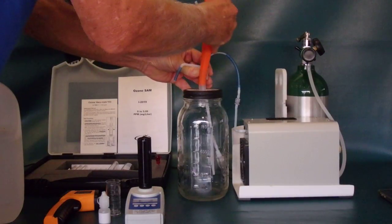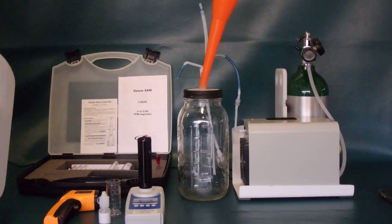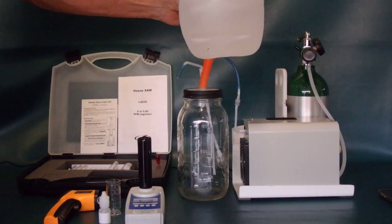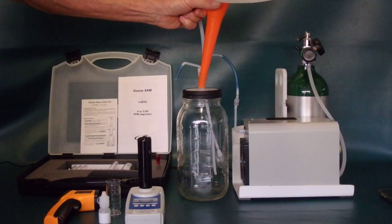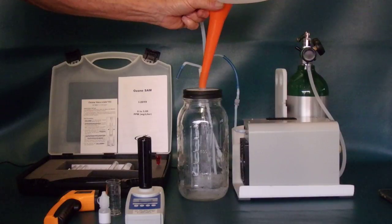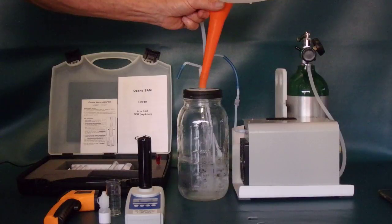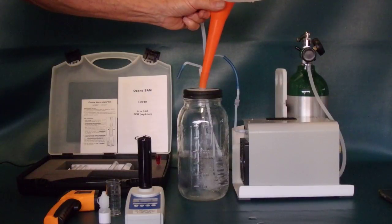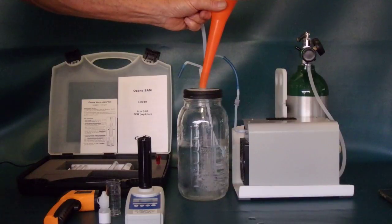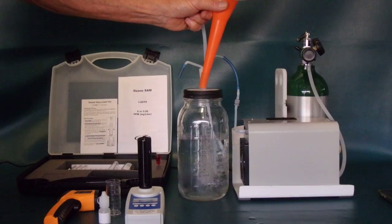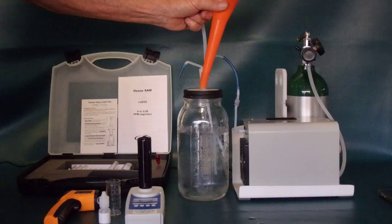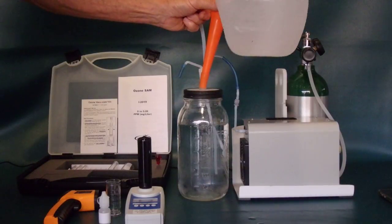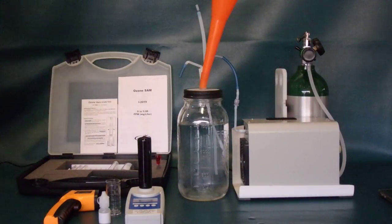We're going to be testing with the Kemetrix SAM system that goes 0 to 5 parts per million. Now since we expect to have greater than 5 parts per million, we're going to have to dilute it 4 to 1. But for now let's just put our water in the system here. Let's put in a full half gallon.